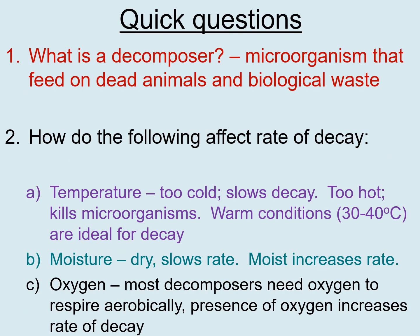Mark your work in green pen. A decomposer is a microorganism that feeds on dead animals and biological waste. For question two, temperature: if it's too cold that slows decay; if it's too hot that kills microorganisms — you're looking to get things to about 100 degrees Celsius to kill most microbes, because the enzymes inside them get denatured and can't work anymore.